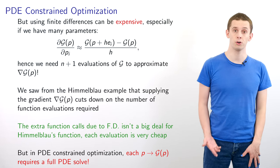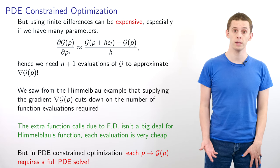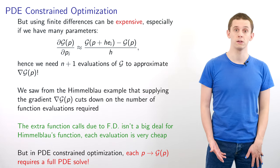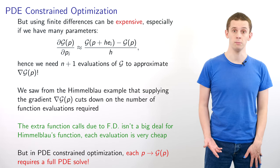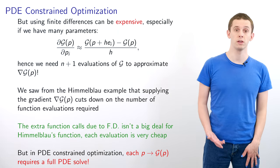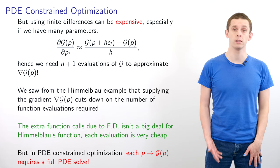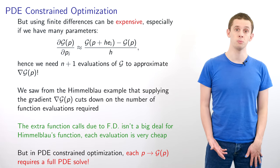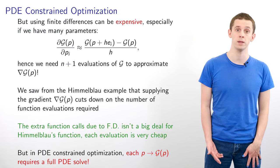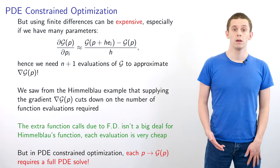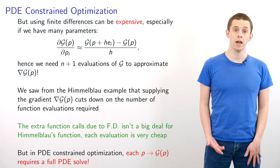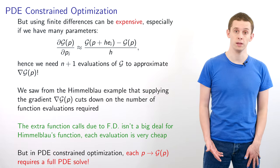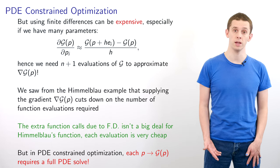Suppose that we approximate dg/dp_i at p. We could use a first order finite difference scheme: [g(p + he_i) - g(p)]/h, where h is a small step size and e_i is a unit vector in the p_i direction. Hence we need n+1 total evaluations of g in order to approximate the full gradient of g at p.